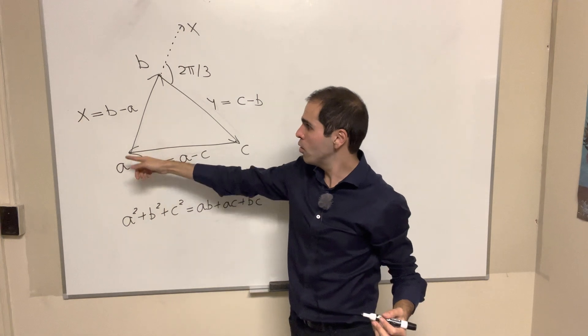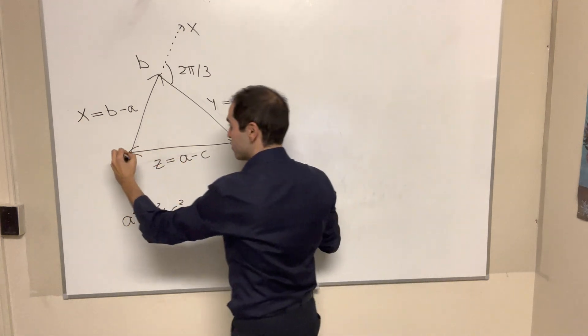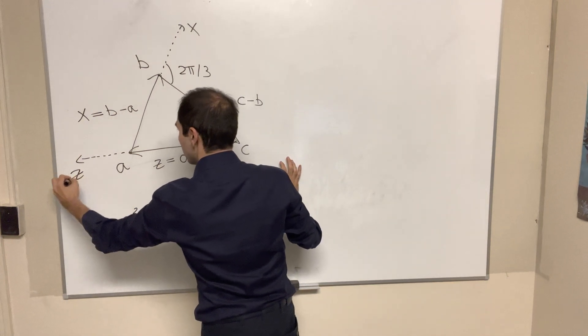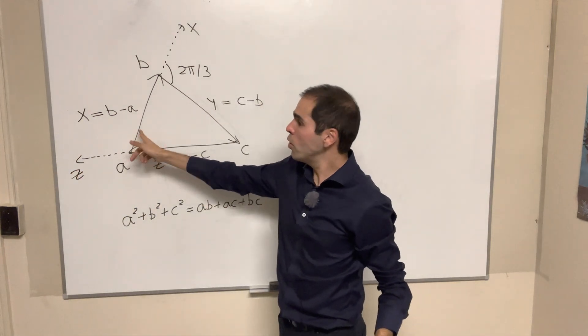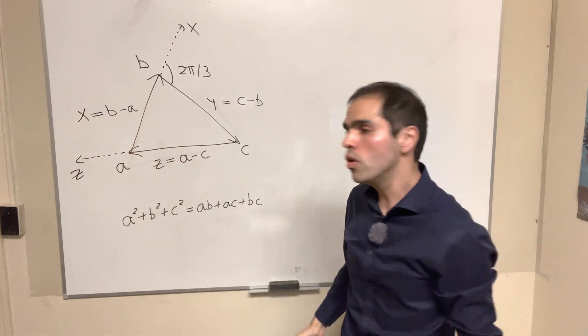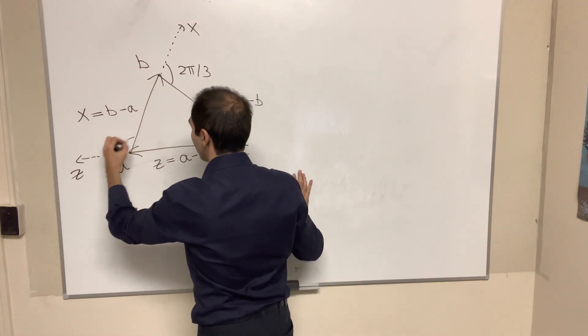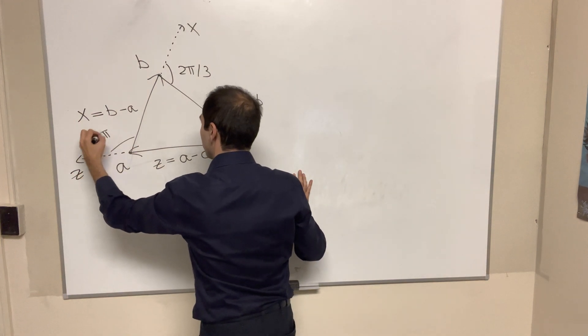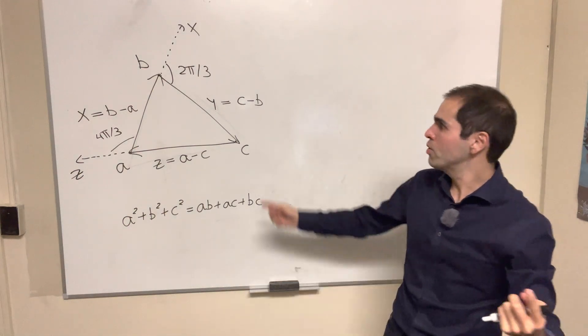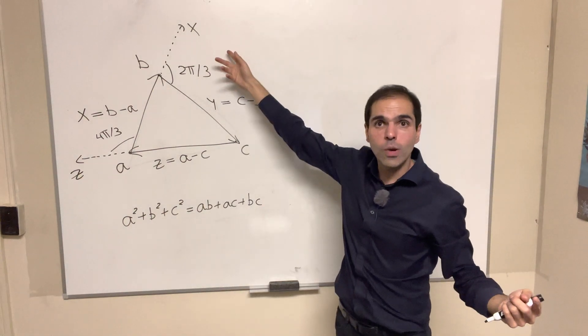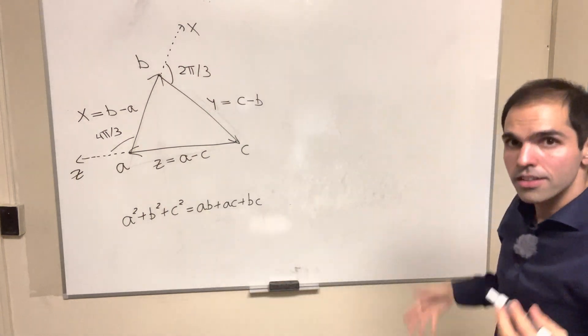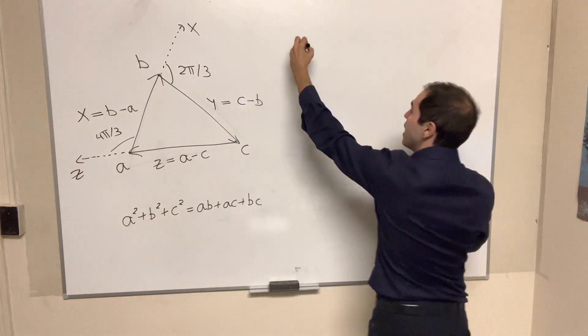And similarly, in order to go from z to x, so this is z, then you rotate by 120 degrees clockwise, which is the same thing as 240 degrees counterclockwise, so 4π over 3. Or the other way around, where you rotate by 240 degrees and then by 120 degrees. So in other words, what do we have?